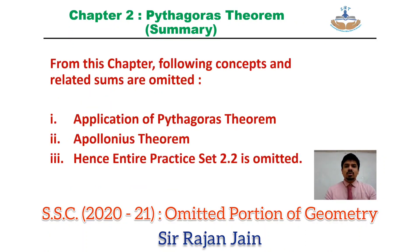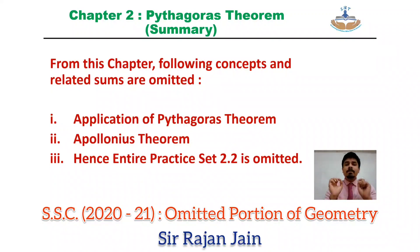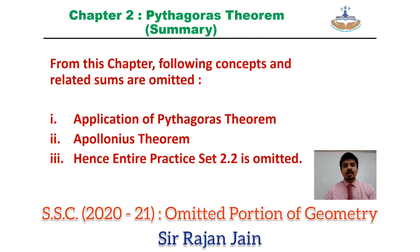To summarize chapter number 2: following concepts and related sums are omitted — application of Pythagoras theorem, and Apollonius theorem. Hence entire practice set 2.2 is omitted. Not only practice set 2.2, but the solved examples and sums in the problem set which are based on application of Pythagoras theorem and Apollonius theorem are also omitted.